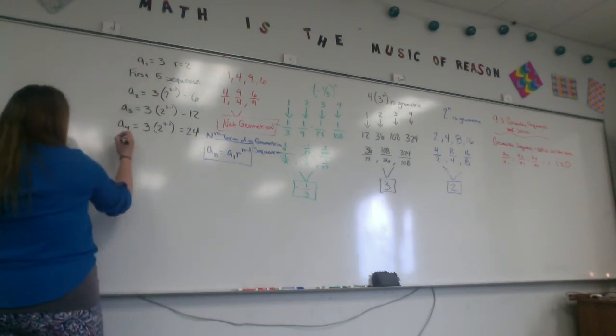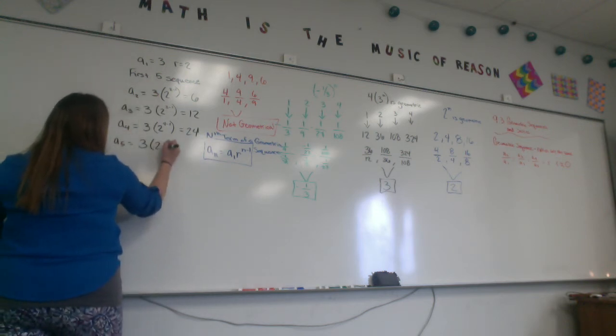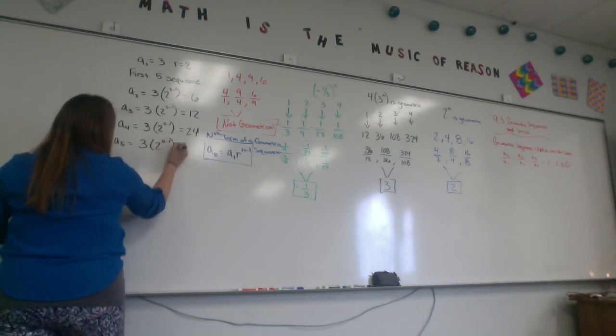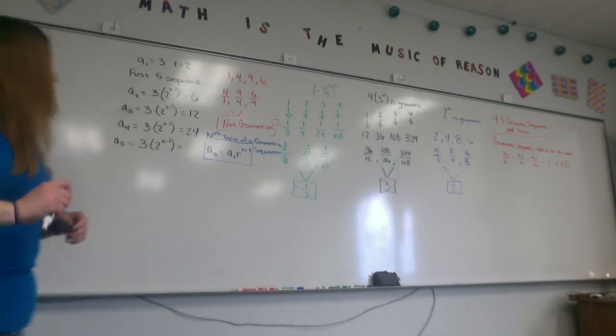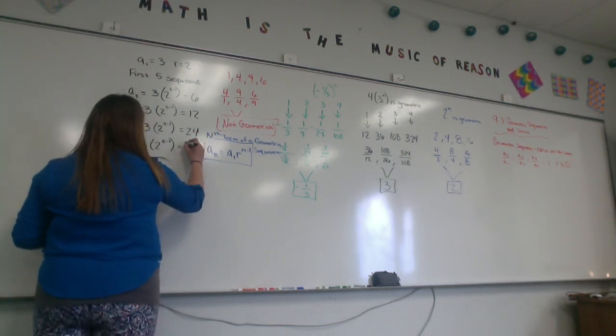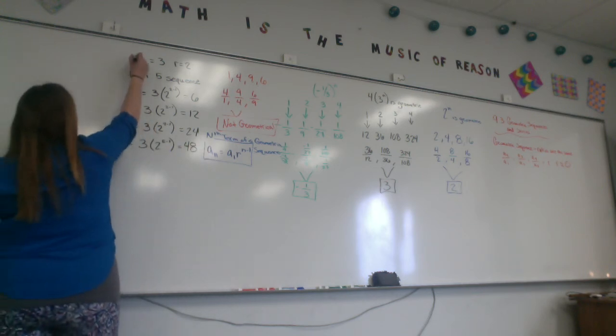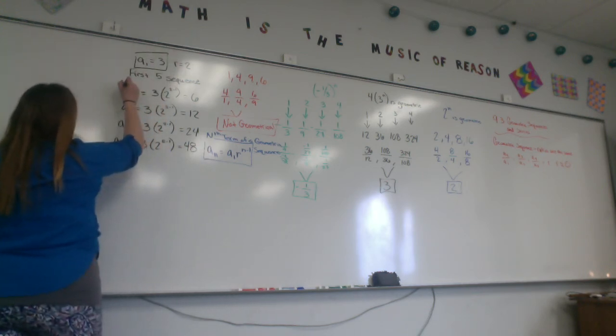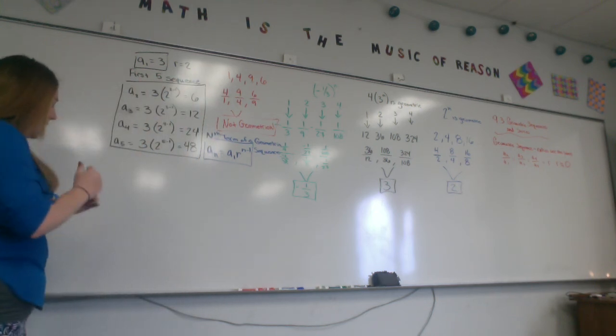And then it wants the first 5, so I just need to find a5 after that. 3 times 2 to the 5 minus 1. 5 minus 1 is 4. What's 2 to the 4th? 16. What's 16 times 3? 48. Now, I have the first 5 terms. They gave me term 1, and I found terms 2 through 5.